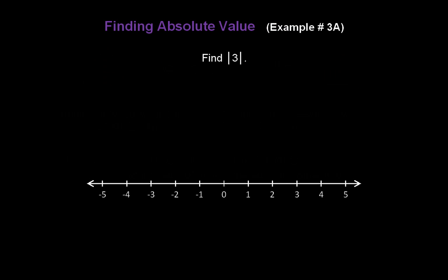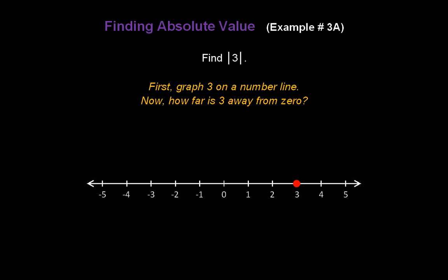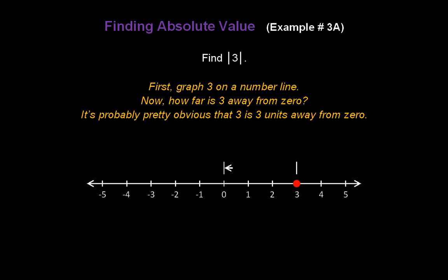So, let's find the absolute value of 3. First, graph 3 on a number line. Now, how far is 3 away from zero? It's probably pretty obvious that 3 is 3 units away from zero. So, the absolute value of 3 is just 3.